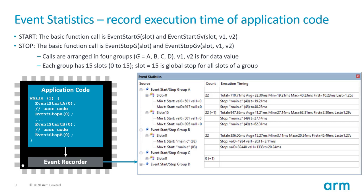A variant of the event recorder is event statistics, using start and stop events across various slots. There are four groups with 15 slots each, and groups can be enabled or disabled. You call an event start and event stop function around your user code. The debug tools then display the number of calls, minimum, maximum, and average execution time, and total execution time — giving up to 64 different measurement slots.